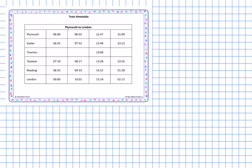Now let's suppose we needed to get a train from Plymouth and we needed to get into Reading before nine o'clock. Which train should I get on — the six o'clock train, the 6:55 train, the 11:47 train, or the 21:09 train? The question is: if I start in Plymouth and want to get into Reading before nine o'clock, which train should I get on?